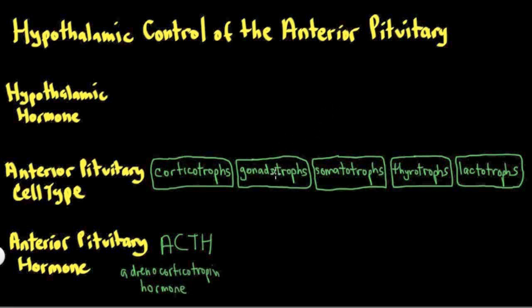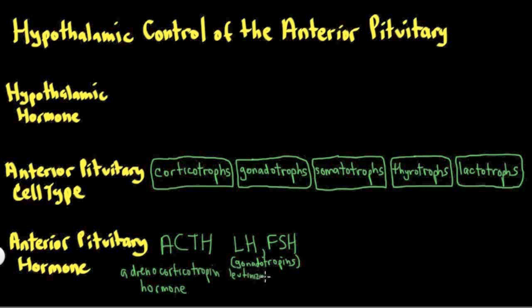The gonadotrophs are interesting because they secrete two hormones — the only cell type in the anterior pituitary that does that. The two hormones are LH and FSH, collectively called gonadotropins because they stimulate the gonads. LH stands for luteinizing hormone and FSH stands for follicle-stimulating hormone. Even though these hormone names reflect their effects on the ovary, the gonadotropins have very important effects in males as well, since the testes have receptors for LH and FSH, regulating male reproductive function.